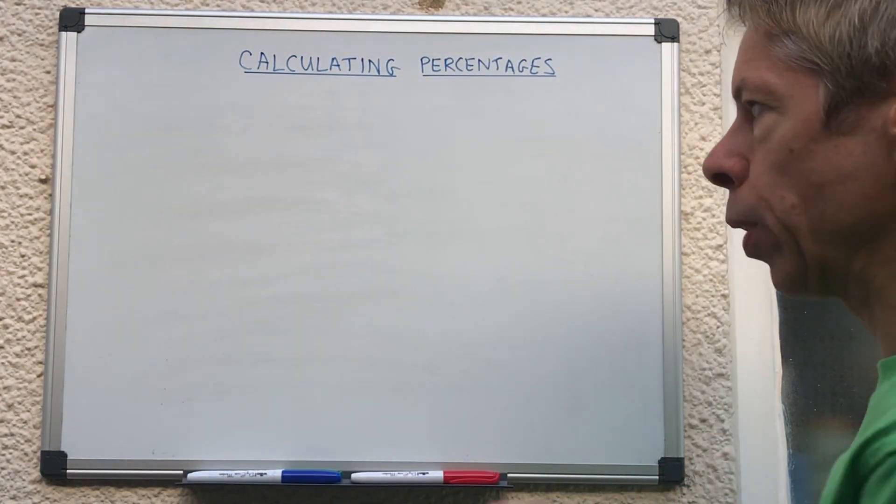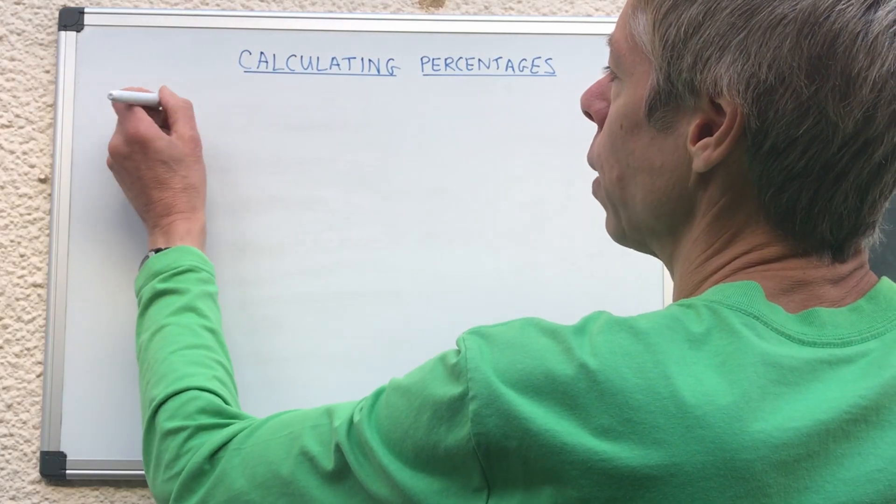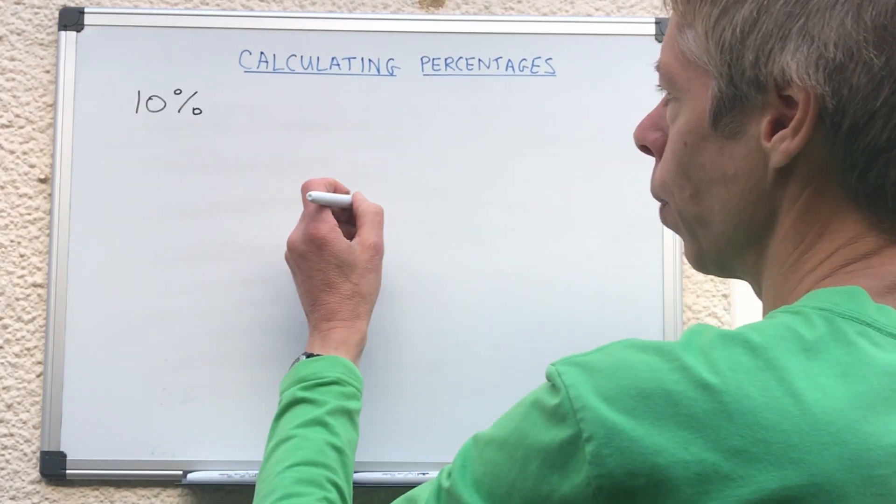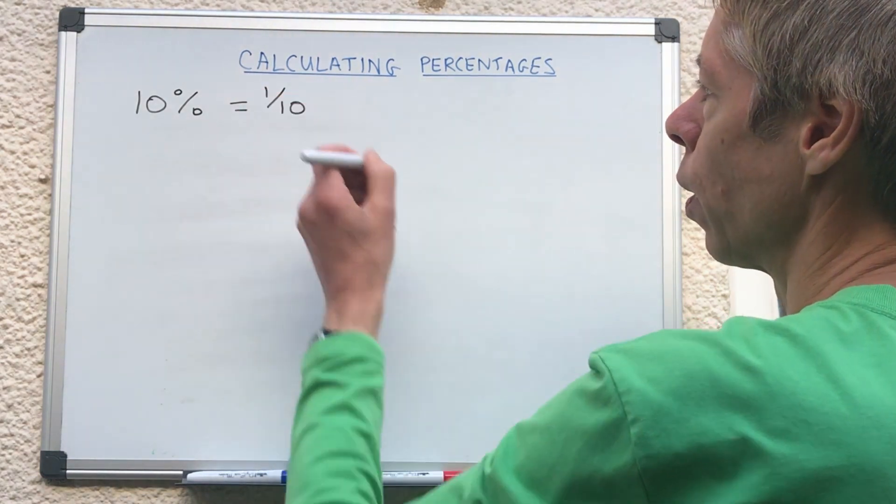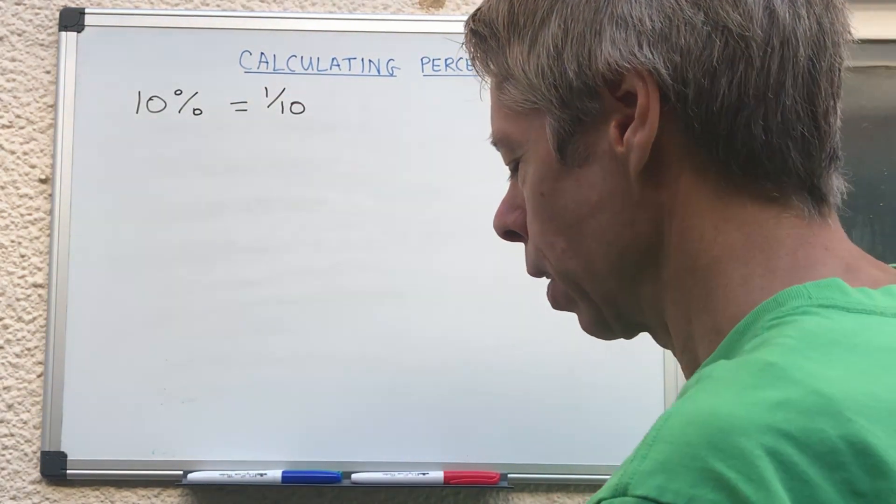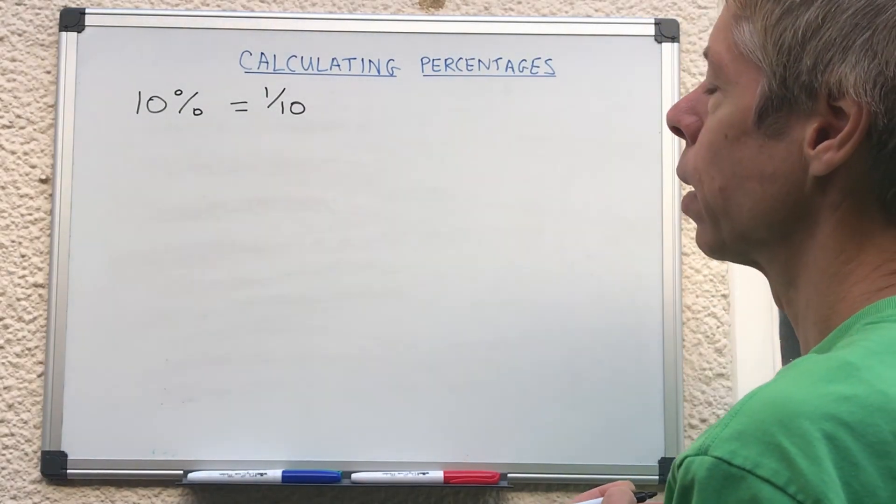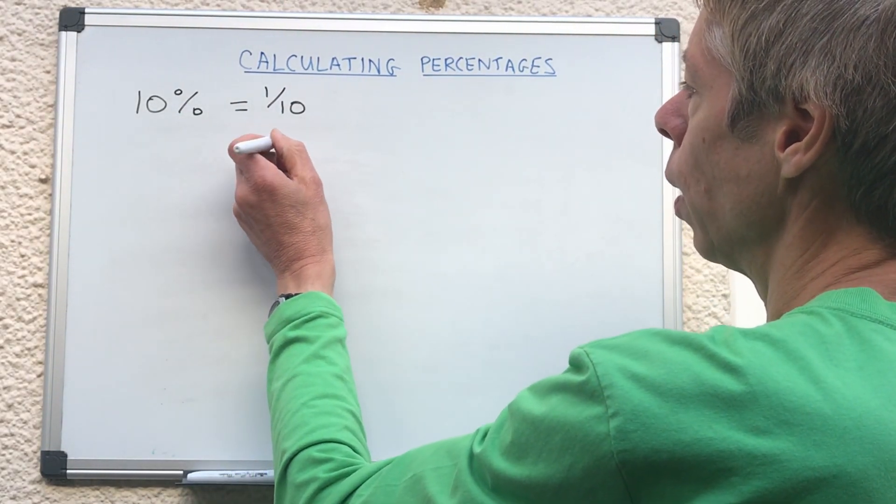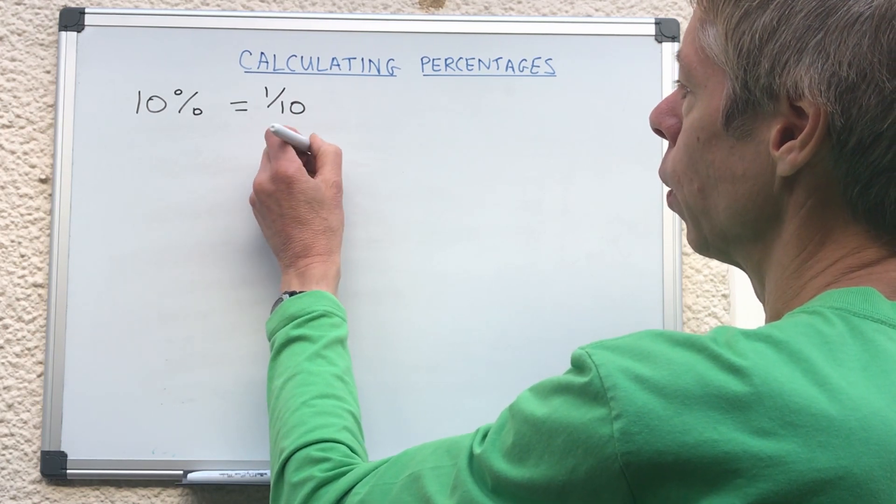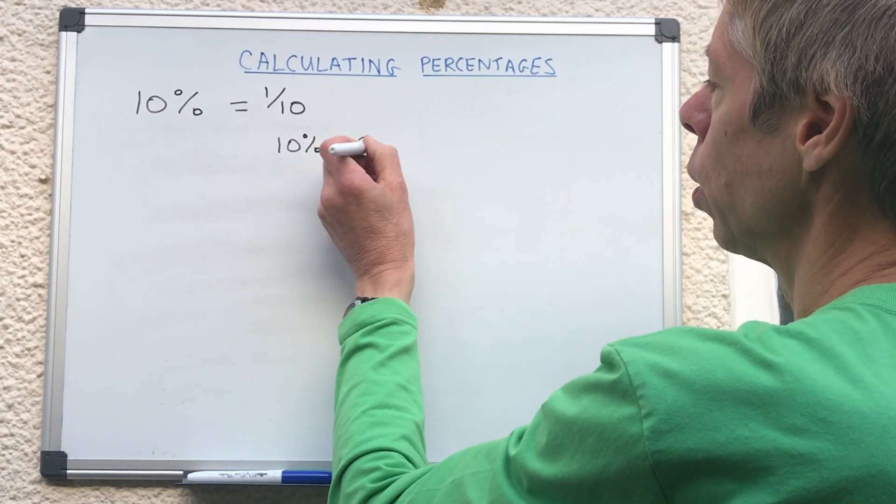Well in our last video we talked about ten percent, and if you remember ten percent of a number is one tenth and we talked a lot about how to divide by ten. So what we're going to do here is we're going to do ten percent of each number, twenty percent, and then we'll do forty percent.